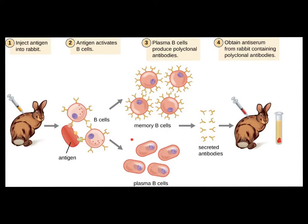These B cells — these immune cells — produce substantial quantities of antibodies against different epitopes on the antigen. The antibodies are secreted, the serum is collected from the animal, and the serum is isolated from cell material. The key thing to remember about polyclonal antibodies is that they're not specific for one epitope — rather, these antibodies will recognize a number of different epitopes on the antigen.